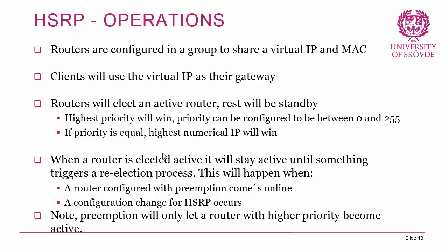Routers are configured in a group and share a virtual IP and virtual MAC address. The client uses the virtual IP as their gateway. The routers elect an active router and the rest become standby. The highest priority wins the election — priority is configurable between 0 and 255, with a default of 100. If priorities are equal, the highest numerical IP address wins. An elected active router stays active until a re-election is triggered.